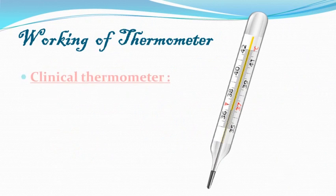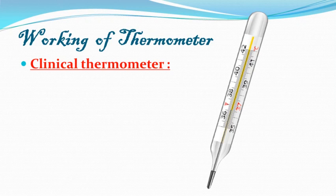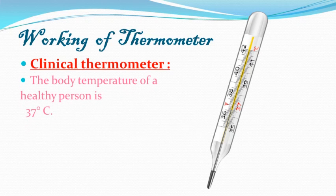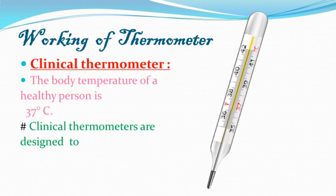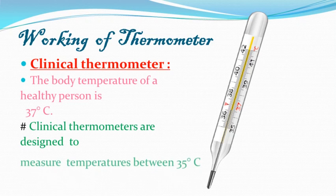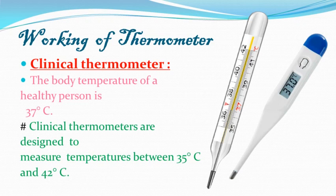The clinical thermometer is designed to measure temperatures between 35°C and 42°C, since the body temperature of a healthy person is 37°C. These days, digital thermometers are used instead. A digital thermometer does not use the expansion of liquid; instead, it has a sensor which directly measures the heat coming from the body to give a temperature reading.